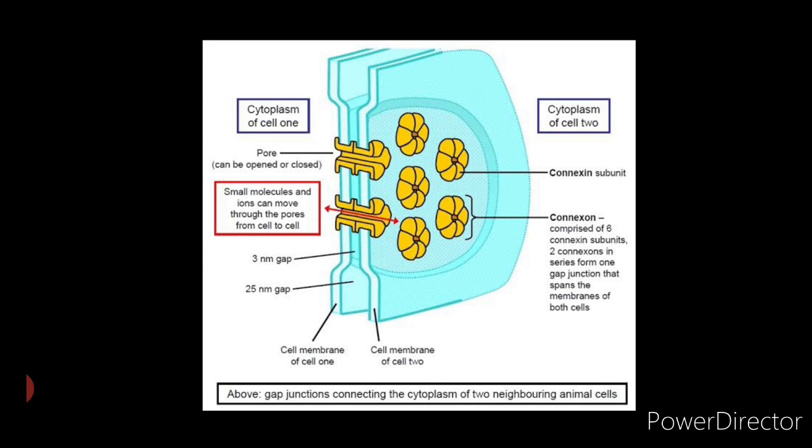Each connexon is arranged around a central opening or annulus that is 16 Angstroms in diameter. At the extracellular surface, the proteins in connexons are arranged in a circle to create a channel through the plasma membrane that protrudes several nanometers from the cell surface.